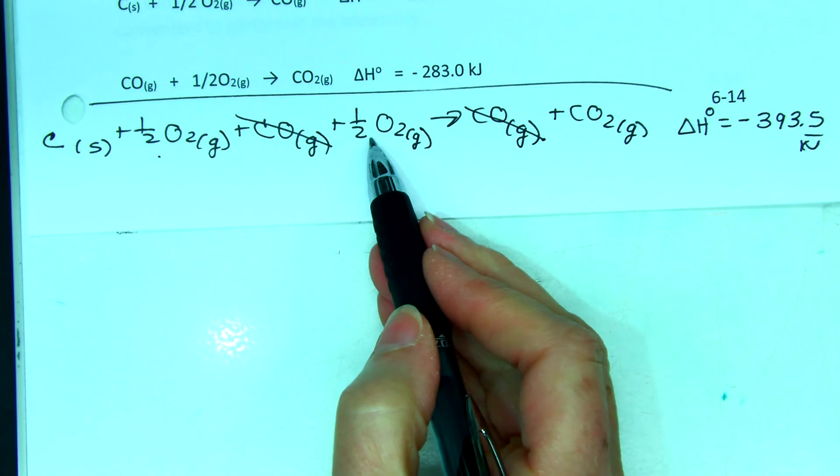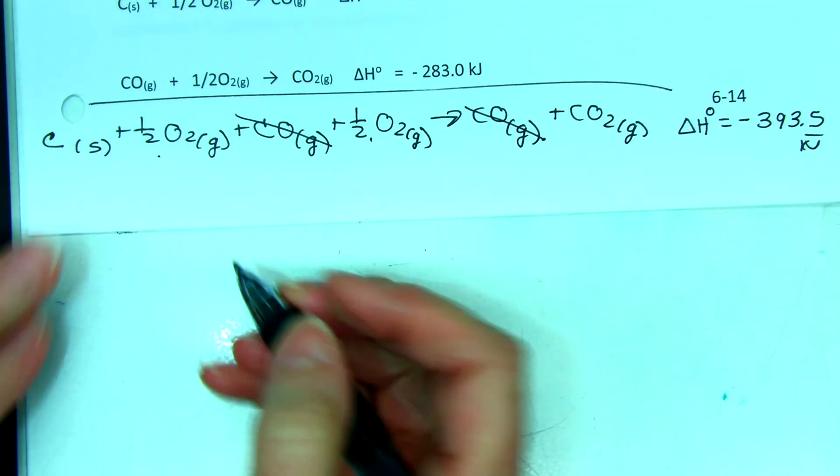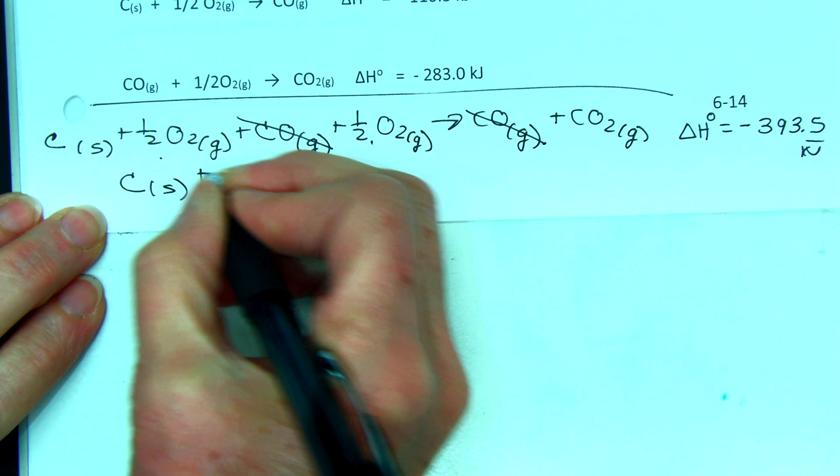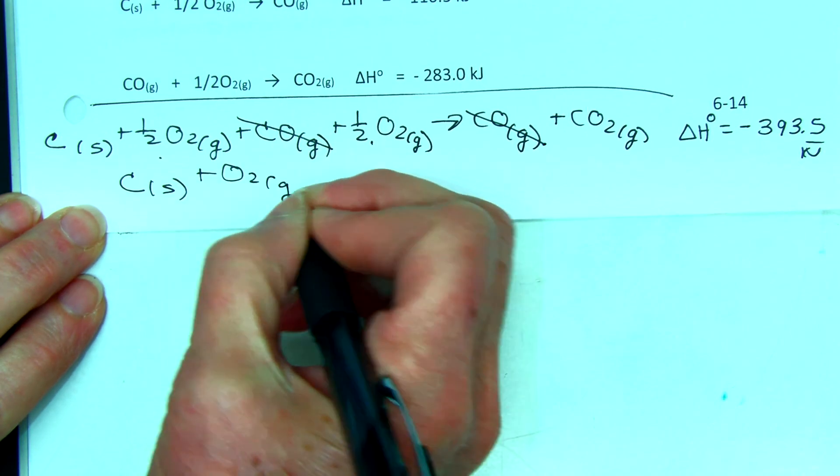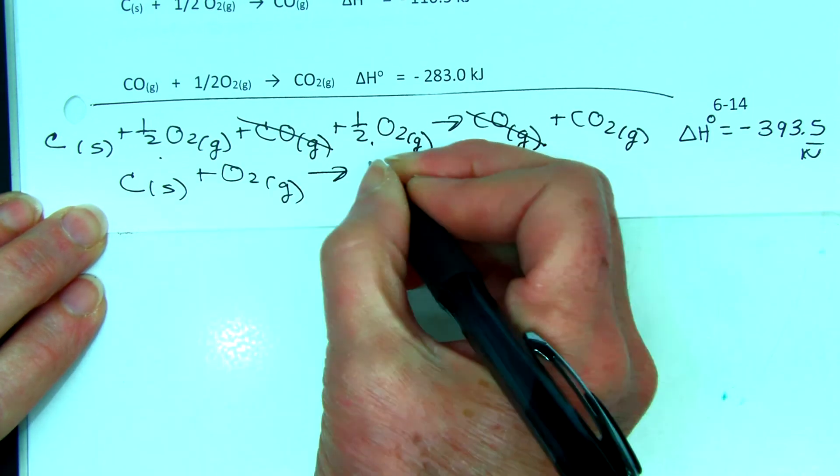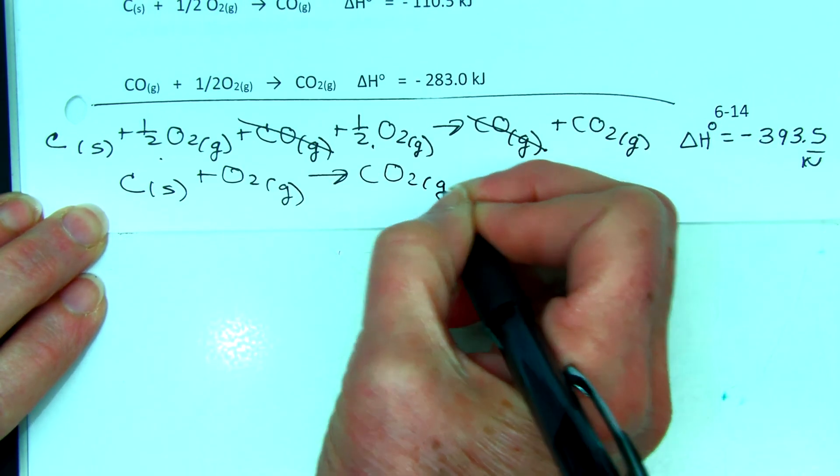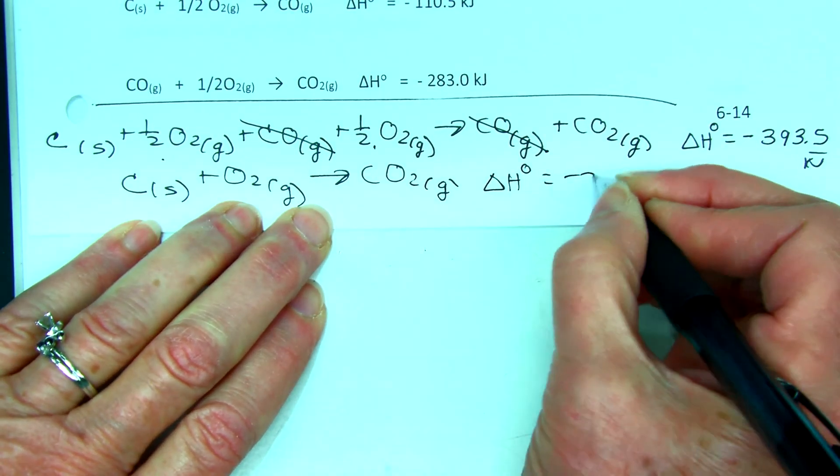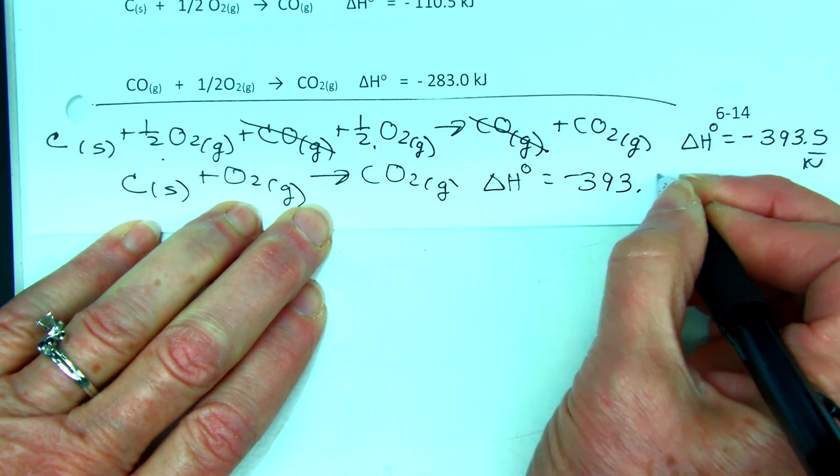Now I have two half moles of oxygen so I can add those together. So carbon solid plus O2 gas yields CO2 gas. Delta H zero is negative 393.5 kilojoules.